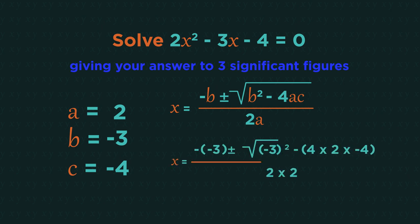Minus minus 3 plus or minus the square root of negative 3 squared minus 4 multiplied by 2 multiplied by negative 4. All of that divided by 2 multiplied by 2. Be very careful with the negatives. Use brackets to prevent mistakes.